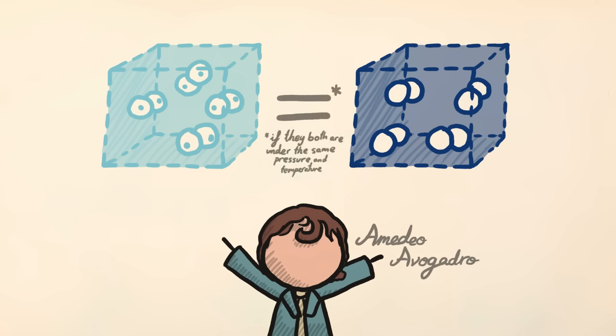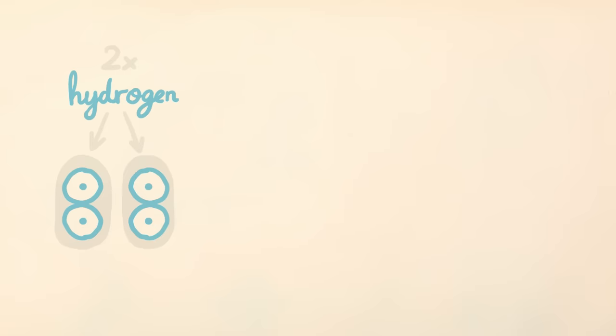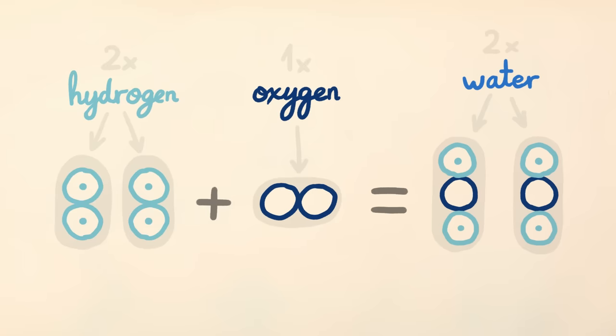With this, we know that one volume of hydrogen has the same number of molecules as one volume of oxygen. That's how we figured out that two molecules of hydrogen could combine with one molecule of oxygen to form two molecules of water.